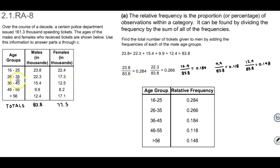The second age group from 26 to 35 is 22.3. We're going to divide that by the total again which is 83.8 which gives us 0.266. And we will continue for the next three age groups to get the following numbers for the relative frequency distribution. So this is the relative frequency distribution for the males.